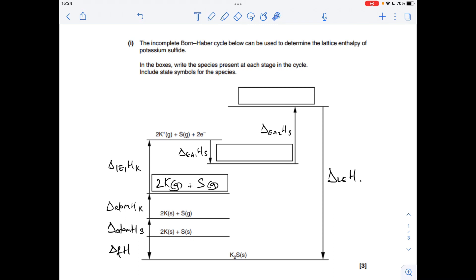The next part of the process is the ionisation of the atoms. So the first thing to happen is the 2 gaseous potassium atoms get turned into 2 gaseous potassium 1+ ions. So that's the first ionisation energy of potassium.